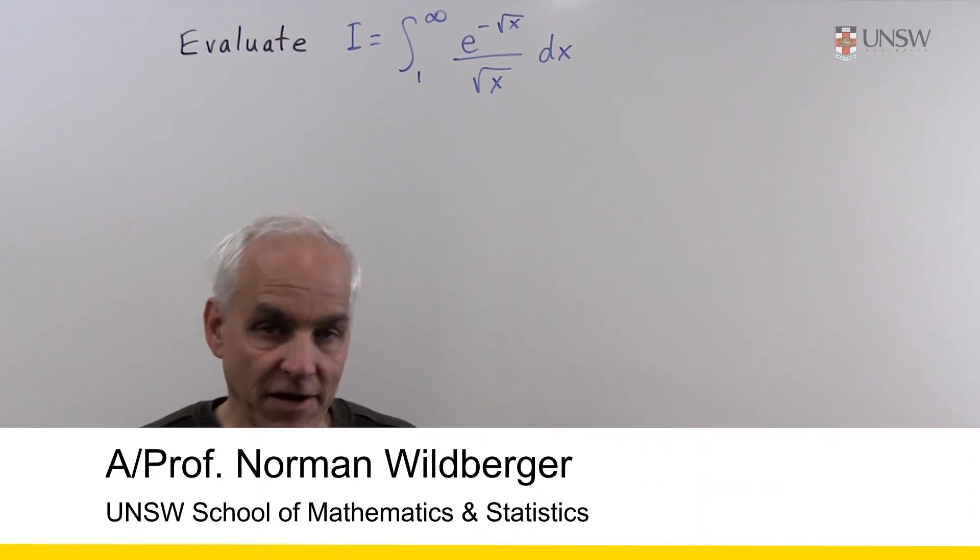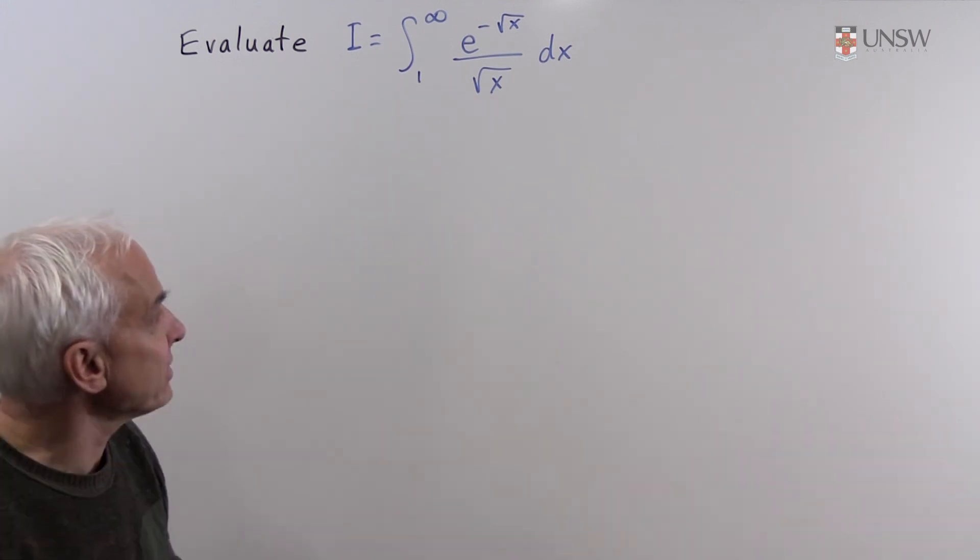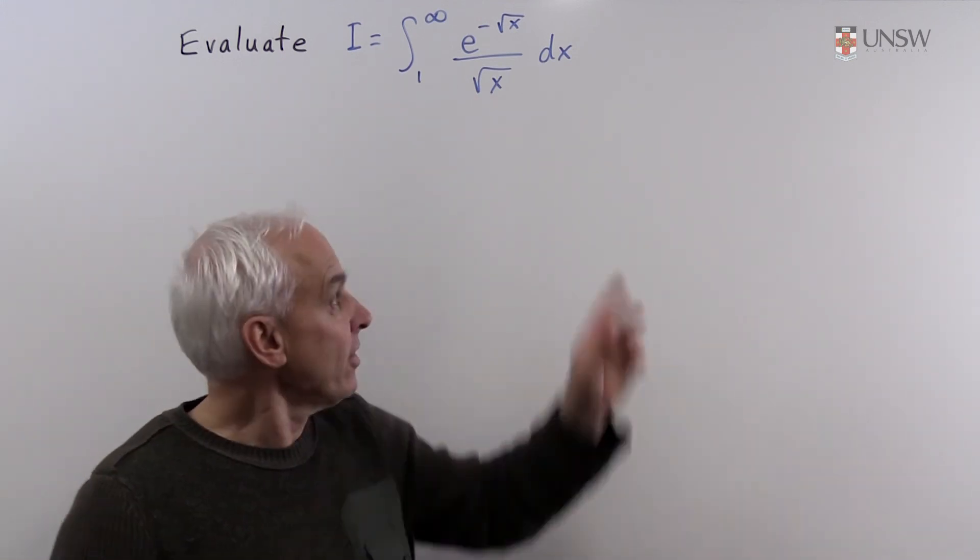In this question we're asked to evaluate a definite integral: the integral from one to infinity of e to the minus root x divided by root x dx.